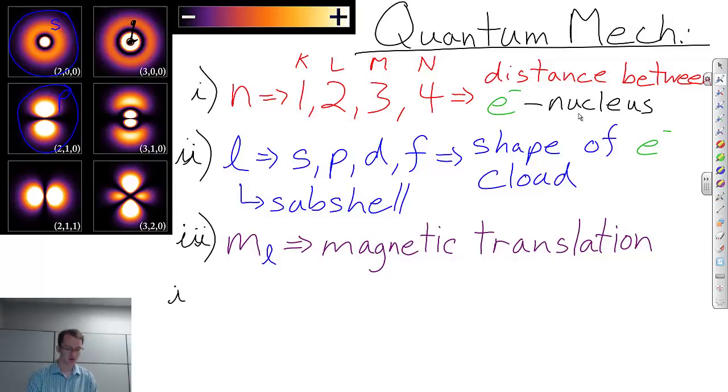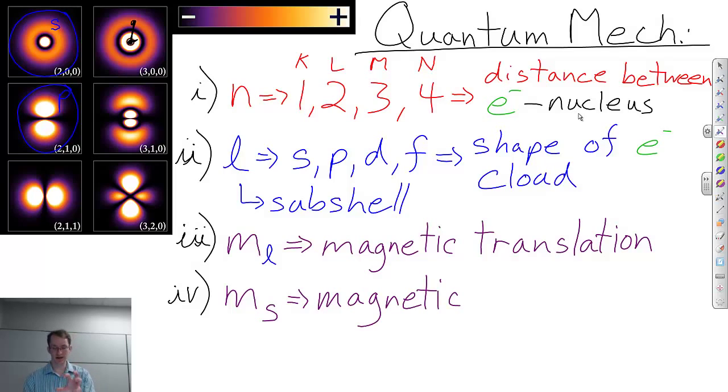And the fourth quantum number that we want to take into consideration will be m sub s. And you probably guessed it already. This is the magnetic contribution to the motion of that electron due to the spinning of that electron. So now we have everything that we need to know to describe the way the electron will move around the nucleus of an atom.